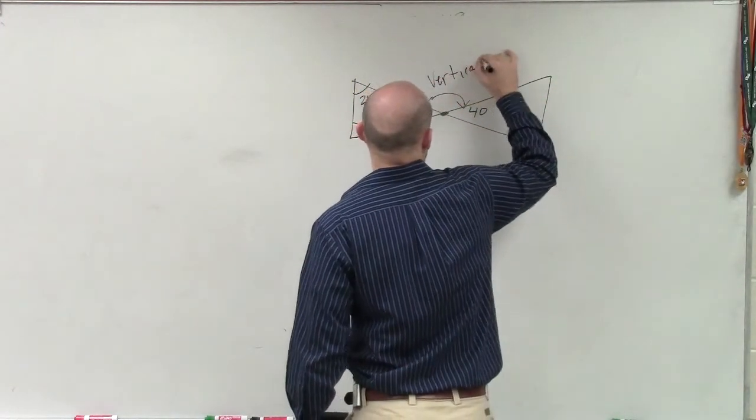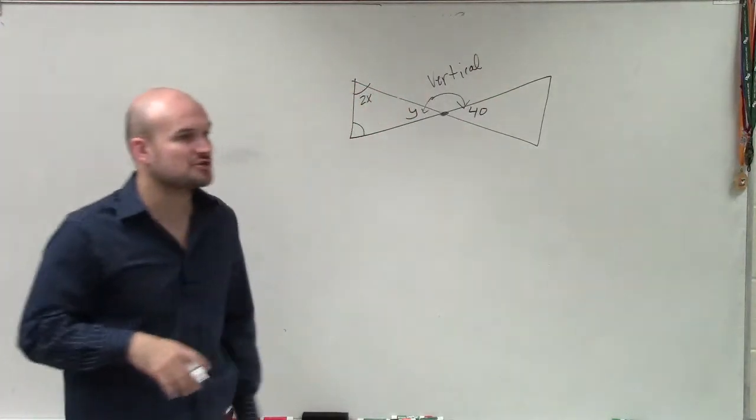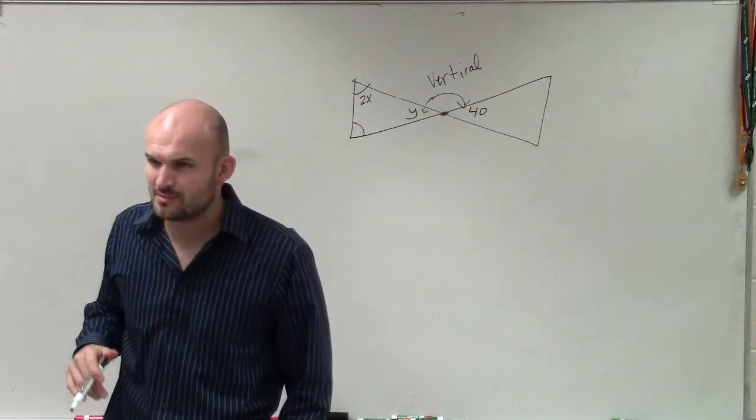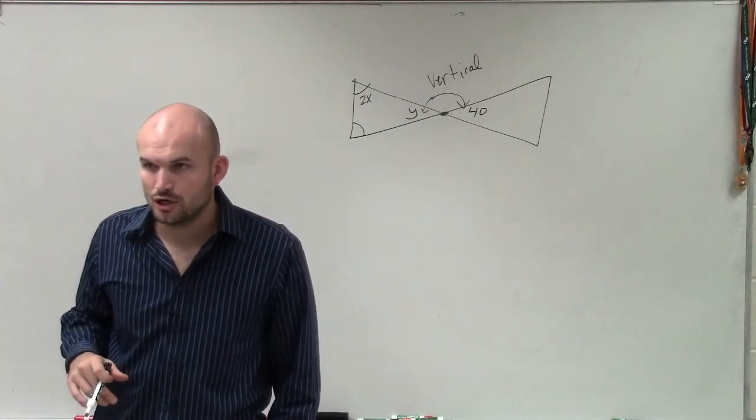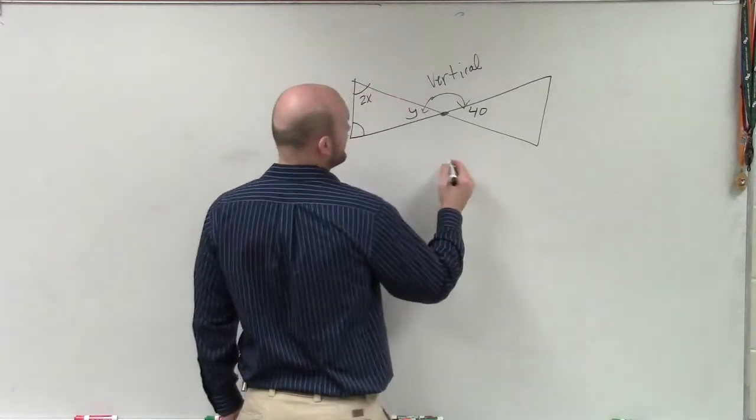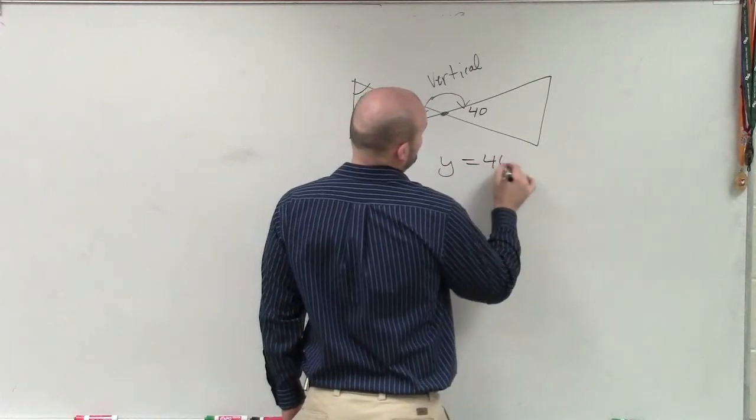And what's even more important about vertical angles is how their measurements relate to each other. Do you remember how vertical angles relate to each other? They're equal. They're equal in measure. Very good. So now you can write that down so you can remember it. So you have y is equal to 40 degrees.